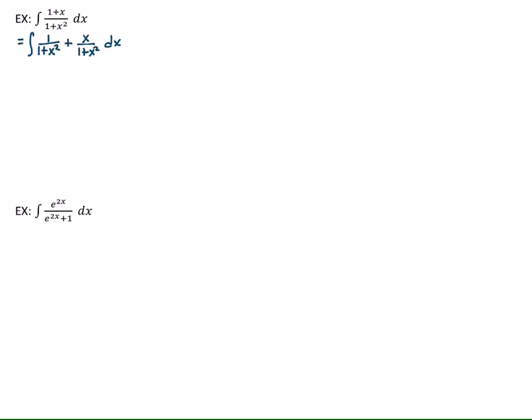For example, in this problem, I can rewrite 1 plus x over 1 plus x squared as two fractions added together, 1 over 1 plus x squared, plus x over 1 plus x squared. All I've done is split the numerator. Now, because I've got two added functions, then I can integrate each one of them separately. So this becomes the integral of 1 over 1 plus x squared dx, plus the integral of x over 1 plus x squared dx. And then I will handle each of these separately.